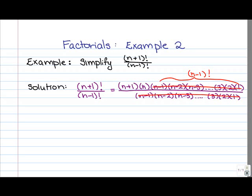Now, let's apply the same logic here. (n+1)! is (n+1) times n times (n-1) times all the numbers below it. Well, (n-1) times all the numbers below it is just (n-1)!. So the numerator is really (n+1) times n times (n-1)!, and we've got an (n-1)! in the denominator, so these cancel,